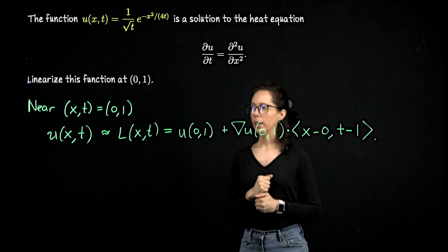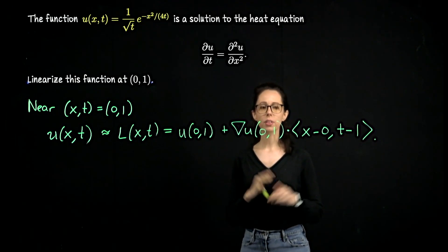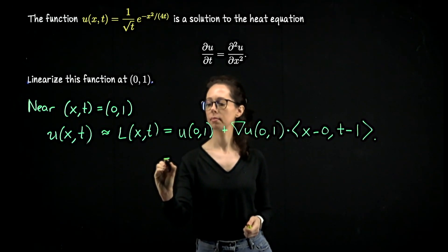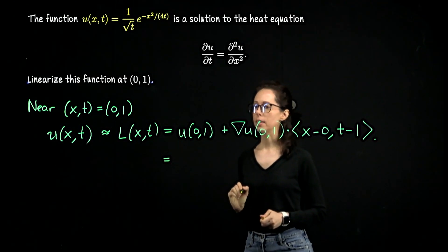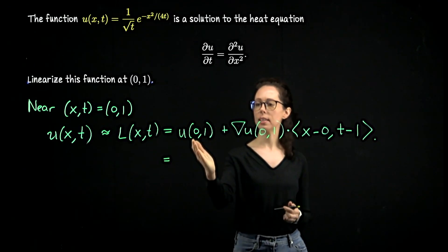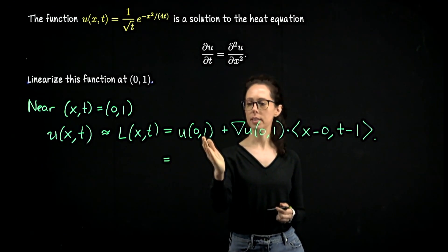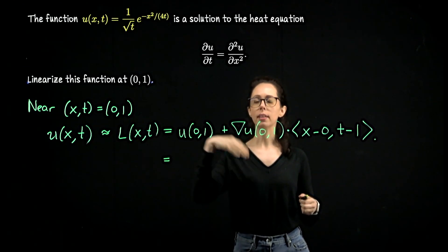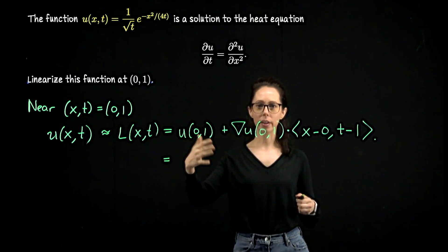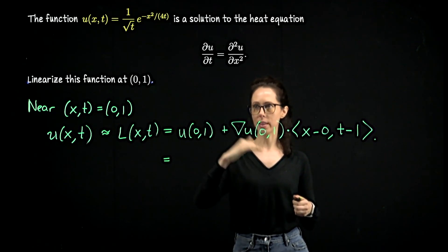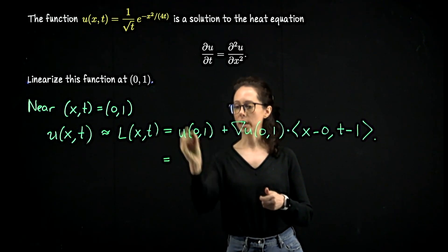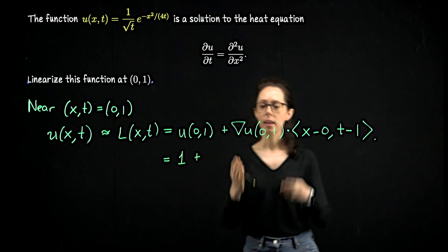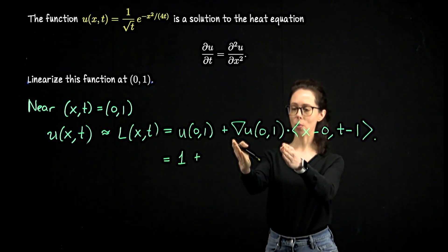Let's see what we can say about this right-hand side. At x = 0, t = 1: one over the square root of 1 is 1, and e to the negative x squared over 4t with x = 0 gives e to the 0, which is also 1. So the first term u(0,1) equals 1. The gradient we will need to compute in just a moment.